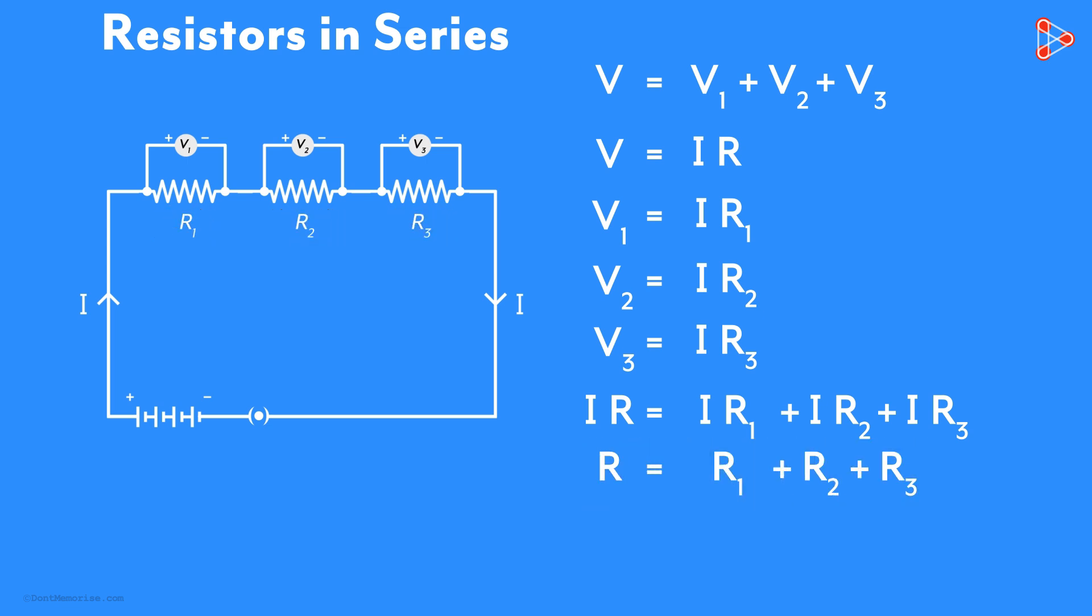Now you understand why the resistance increases when resistors are connected in series. It's because each resistor when added in series adds up to the previous resistance.